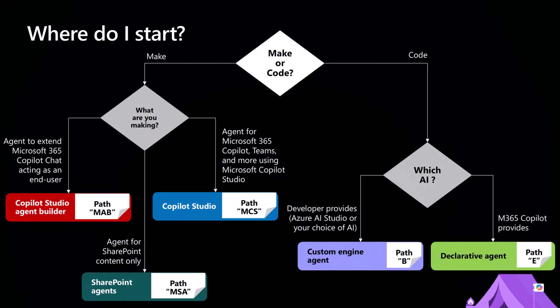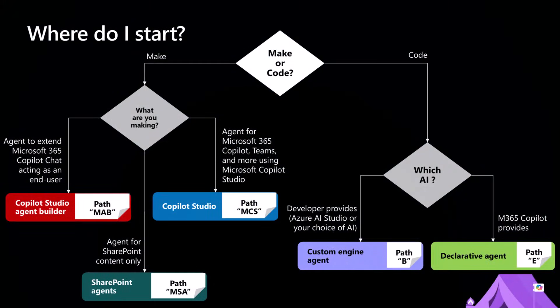First of all you need to choose where you want to start from, whether you are a maker, a professional developer, or both. If you want to create a solution with no code and low code you should go for the Make path, and in there you will find three different sub-options. The very first one is the Copilot Studio Agent Builder option, which is called PathMAB.